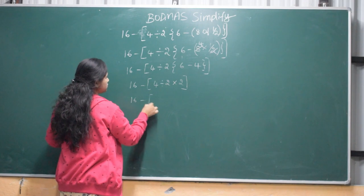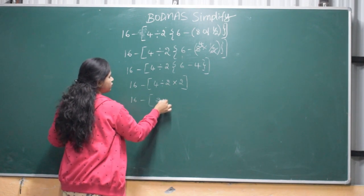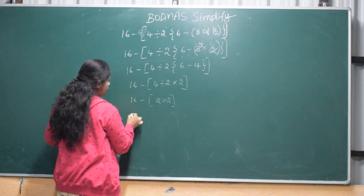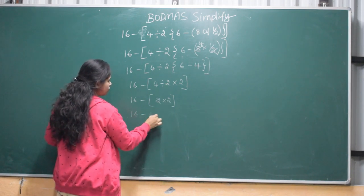16 minus 4 divided by 2 is 2. 2 into 2. 2, 2, 4.